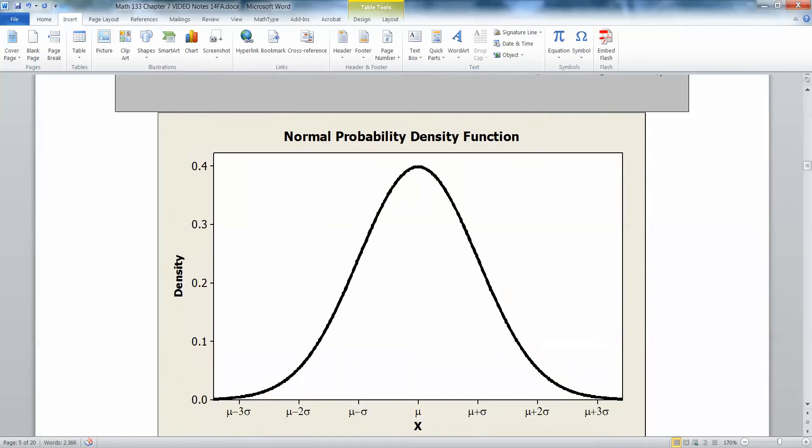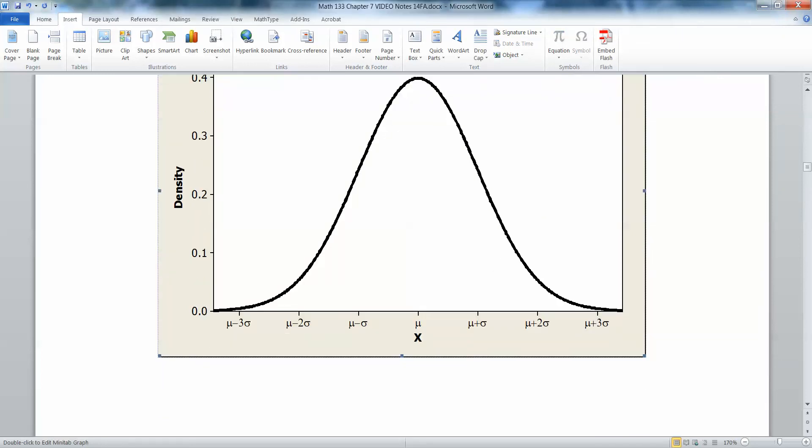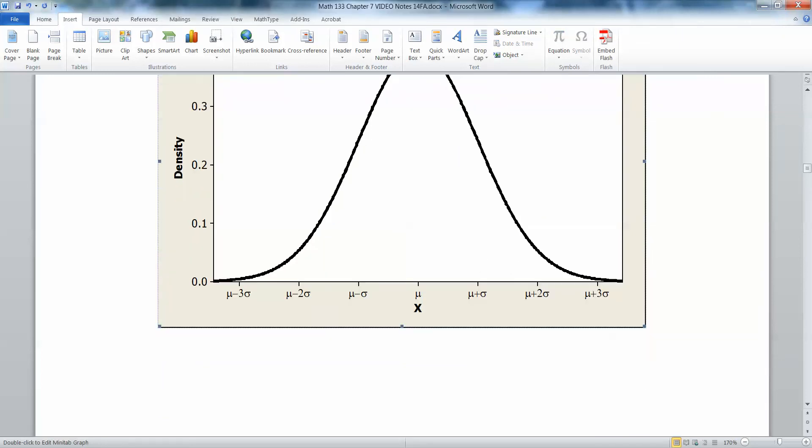All right. So now we have the normal probability curve all figured out. Lovely. You will need to draw the horizontal axis. You don't necessarily draw the vertical axis. You don't need it. But you do need the horizontal axis when you draw it.